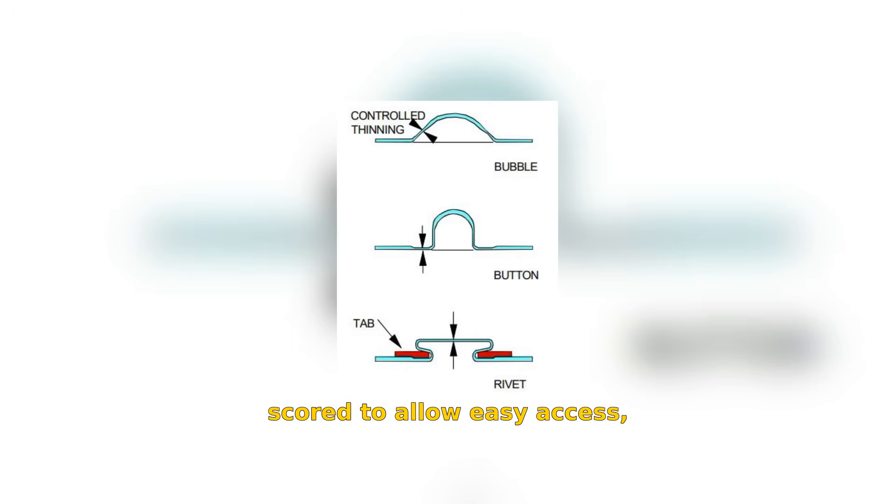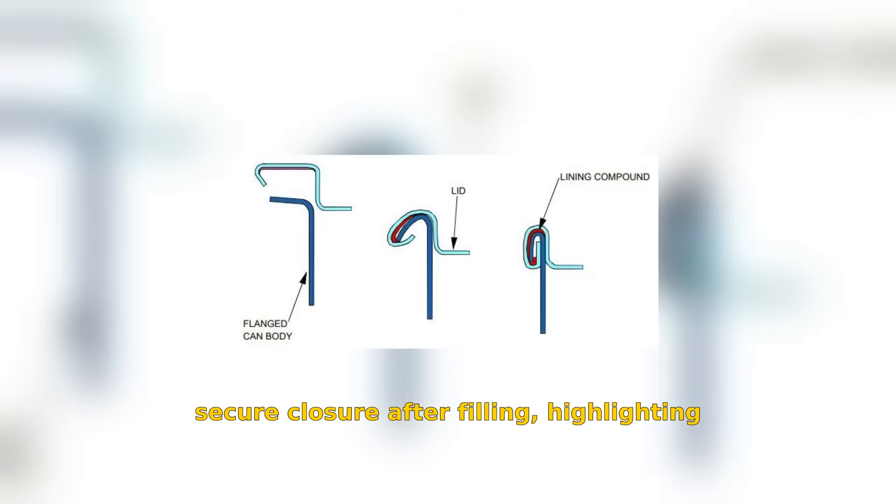The lid is scored to allow easy access while an integral rivet holds the tab securely, indicating careful engineering. The lid attachment employs a double-lock seam for secure closure after filling, highlighting the importance of manufacturing precision.